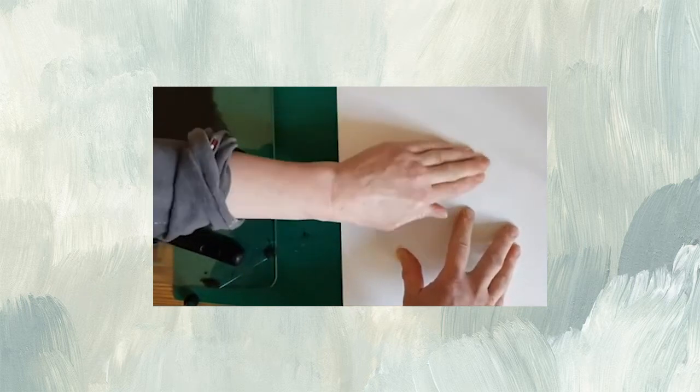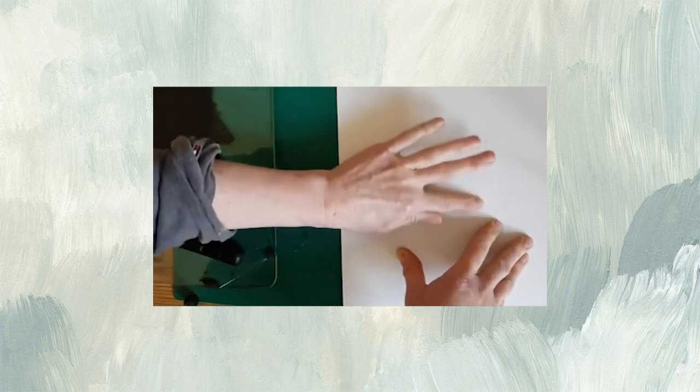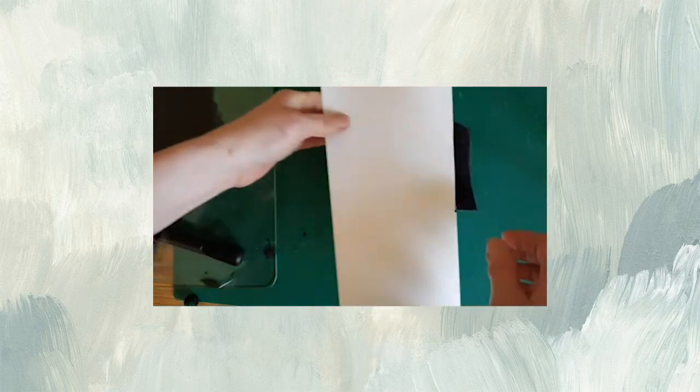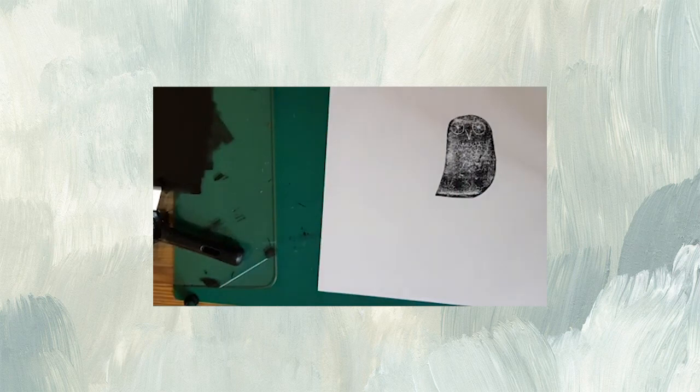And then give it a really good rub right the way around. Try and get the shape of that piece of cardboard and get all of those details on it. And hopefully when we peel it back, there will be an owl. It doesn't work every time. Especially the first couple of turns can be a bit difficult.